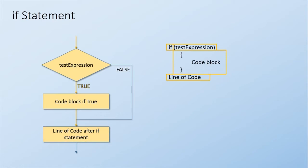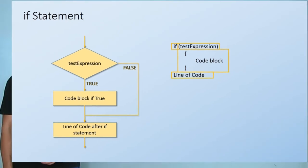If the test expression is false, the program will just skip the entire code block enclosed in curly braces, and goes directly to the line of code immediately after the if statement, then proceed to the rest of the program.